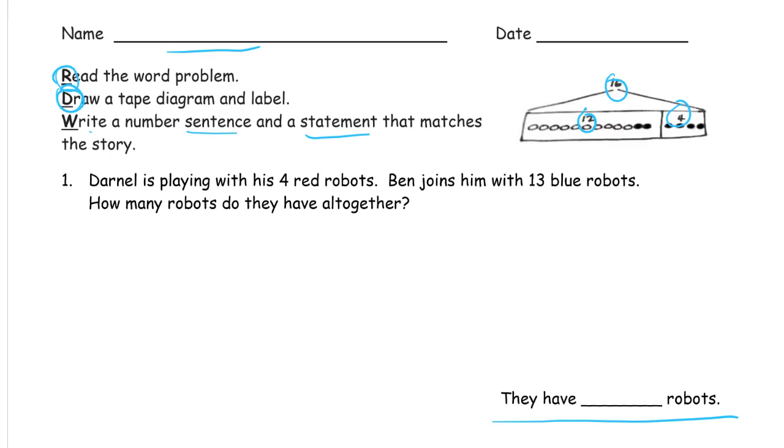So let's just get to the first one. Darnell is playing with his 4 red robots. We'll just draw what it says there is in the order we read it. Darnell is playing with 4 red robots, so I've got 1, 2, 3, 4. And this is a piece of tape that is 4 long, because it has 4 red robots on it. And this is Darnell's robots, D.